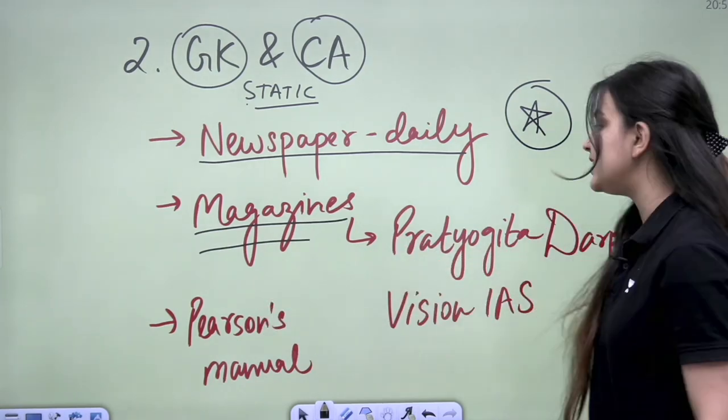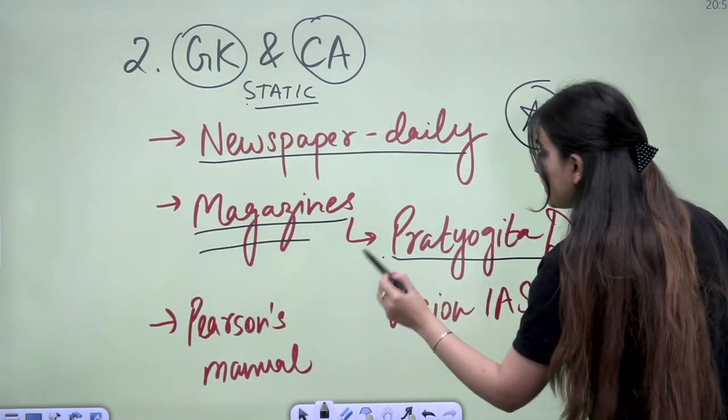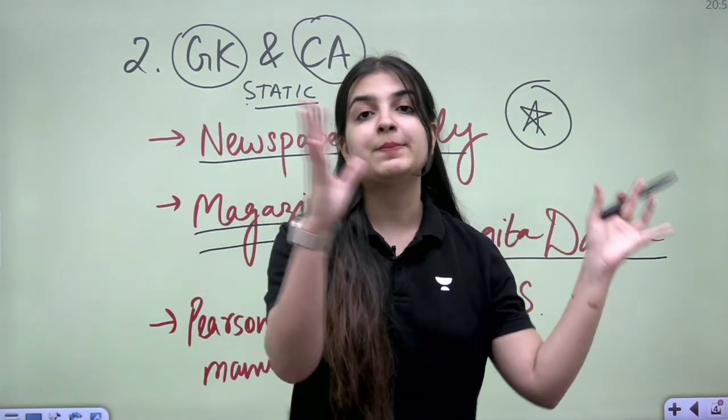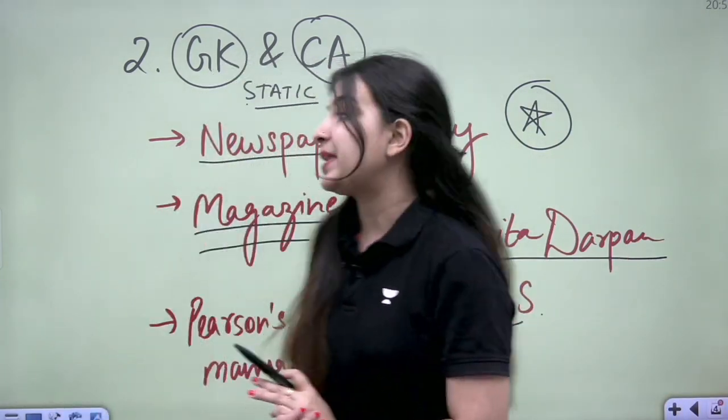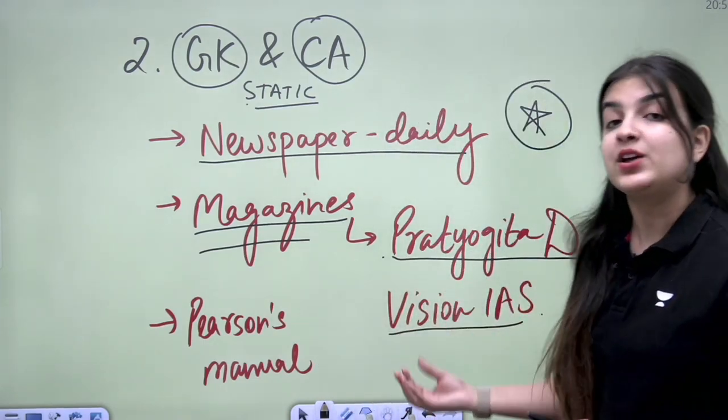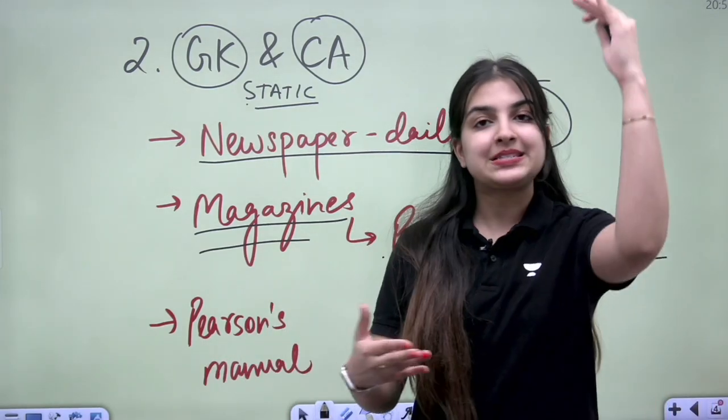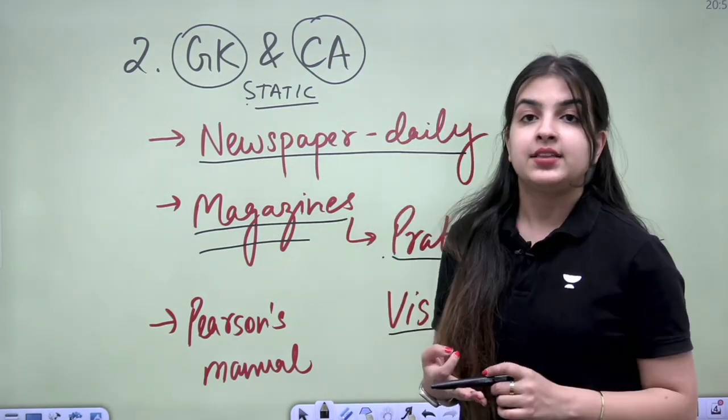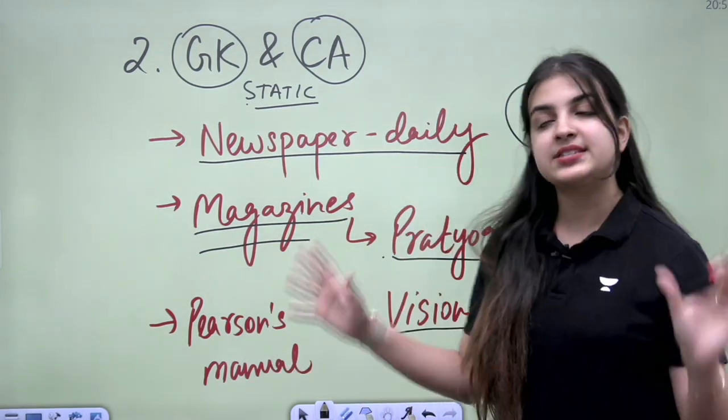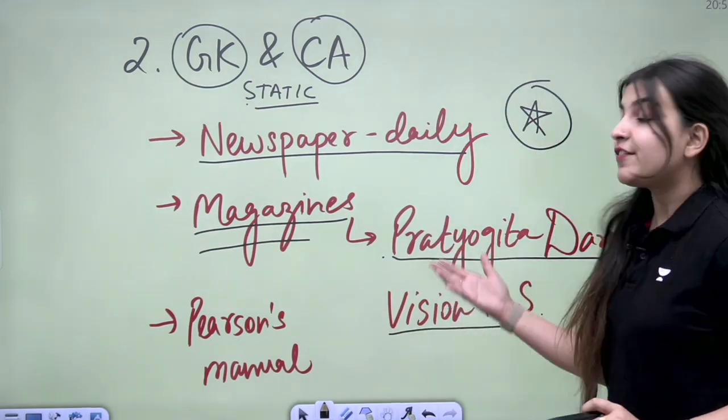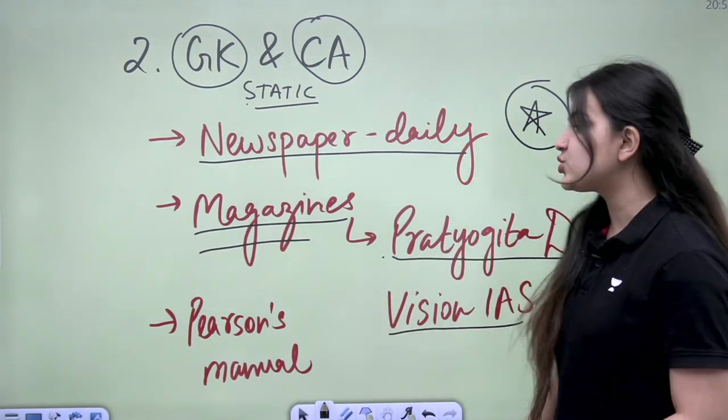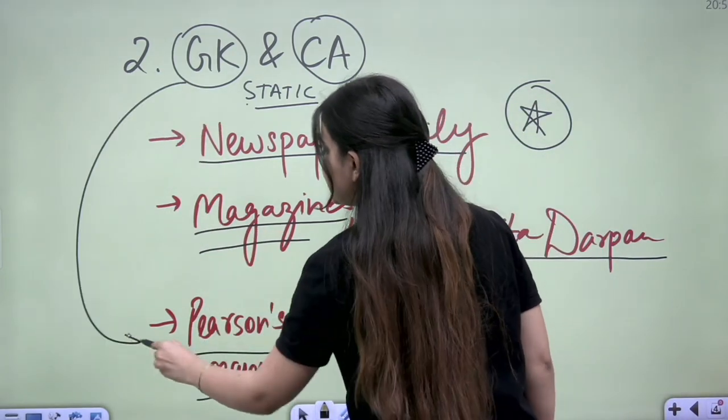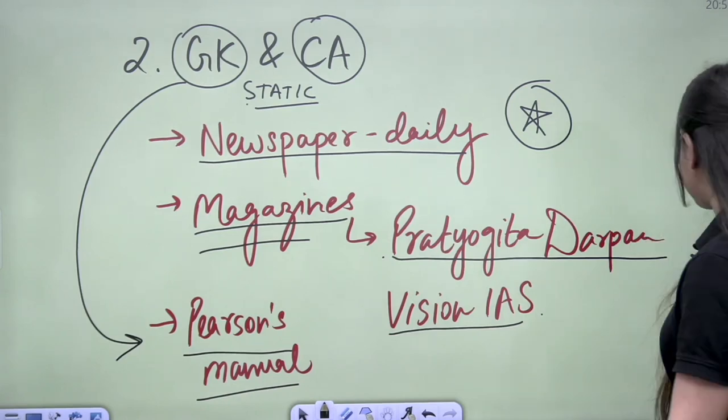Talking about Current Affairs, newspaper daily is your must. Magazines, when your exam is near, you have to refer to magazines like Pratiyogita Darpan, Vision IAS. The IAS Coaching magazine, which is a monthly current affairs compilation, you can refer to them. There are sections in which the news is covered: Legal, Polity, International Relations. Everything is given in that. Very authentic and reliable sources. So these are our sources for GK and Current Affairs.